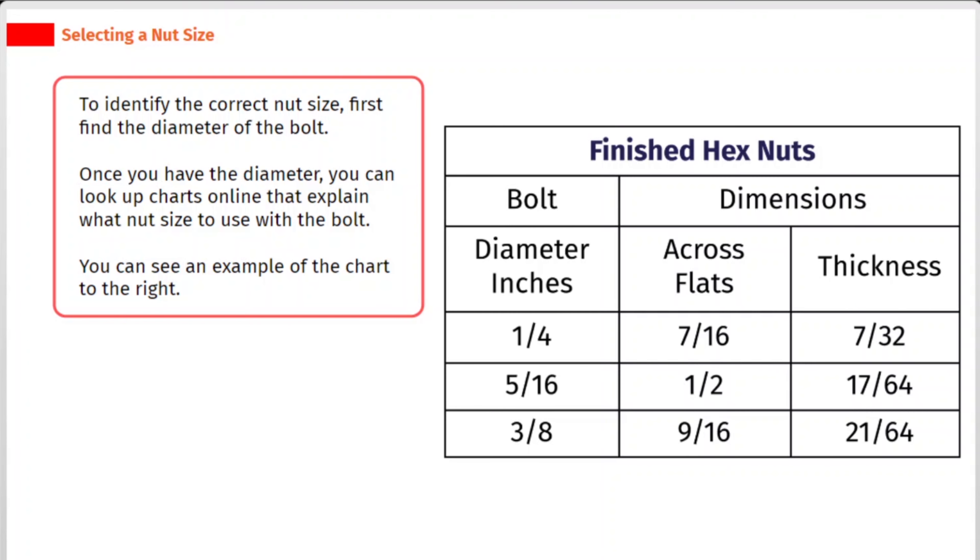To identify the correct nut size, first find the diameter of the bolt. Once you have the diameter, you can look up charts online that explain what nut size to use with the bolt. You can see an example of the chart to the right.